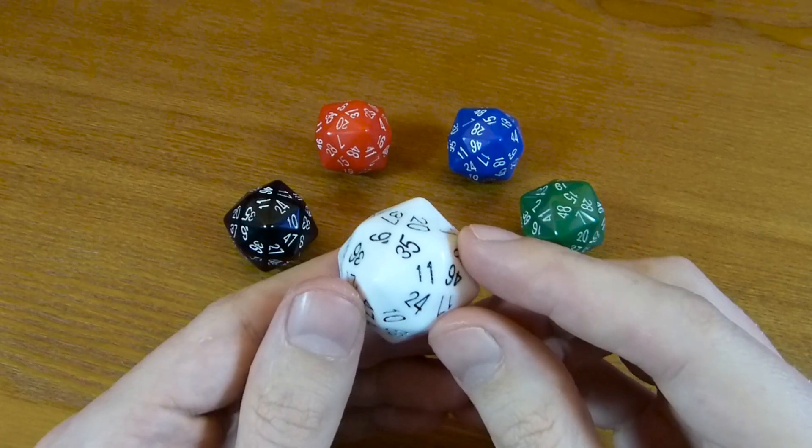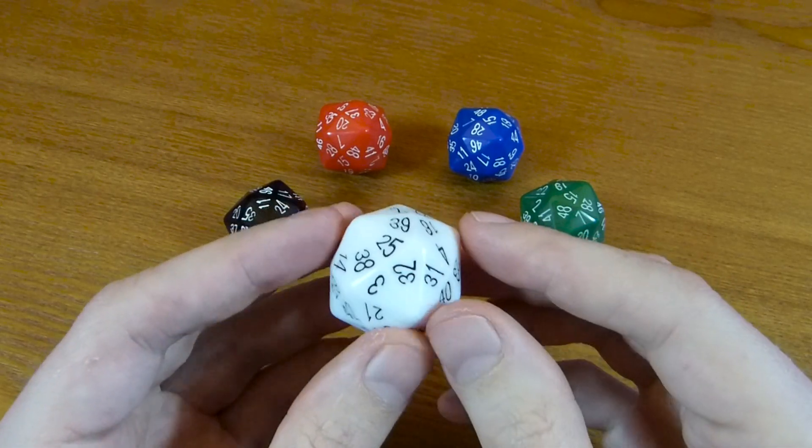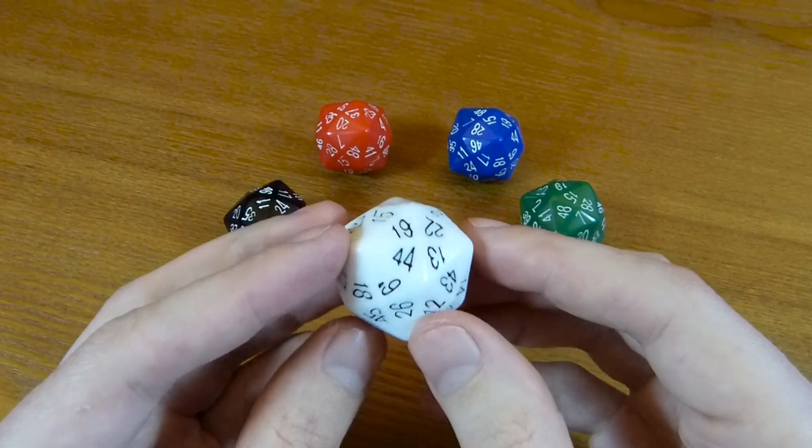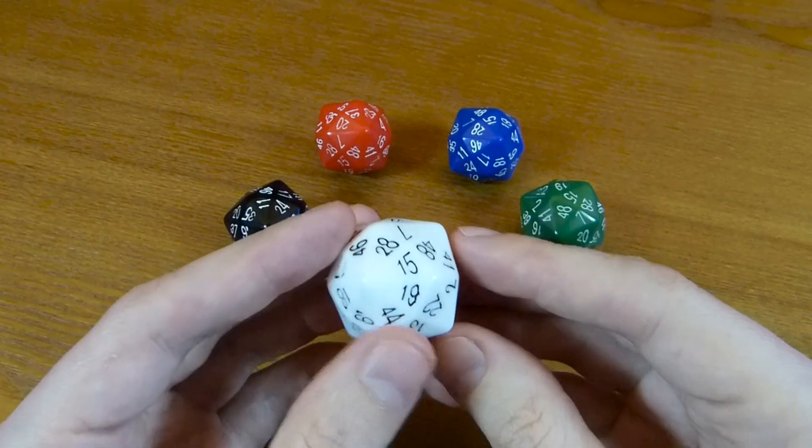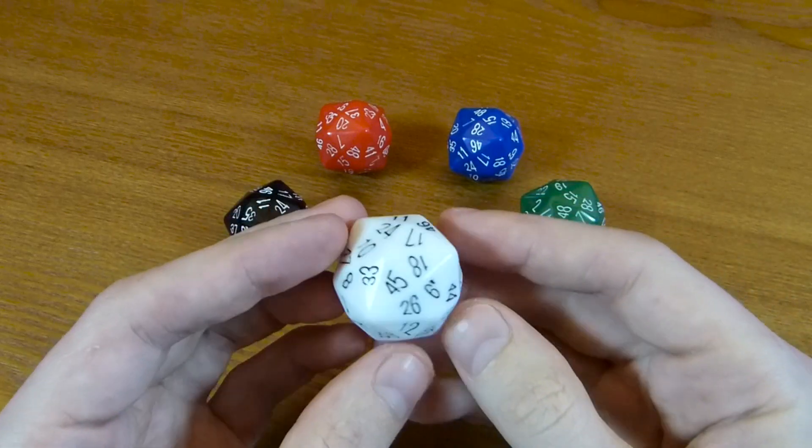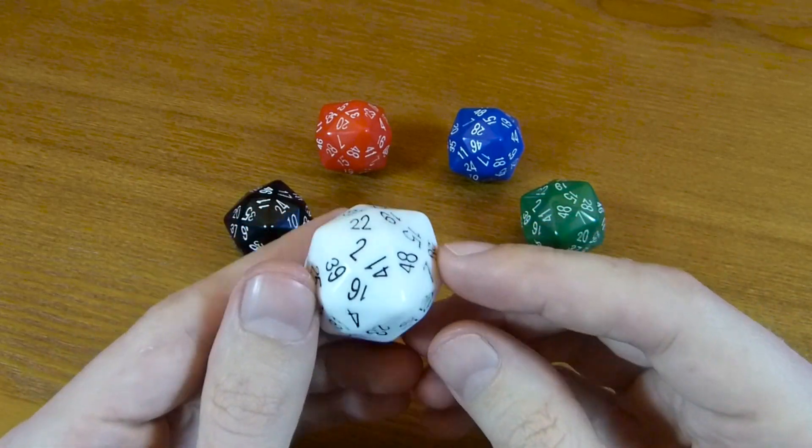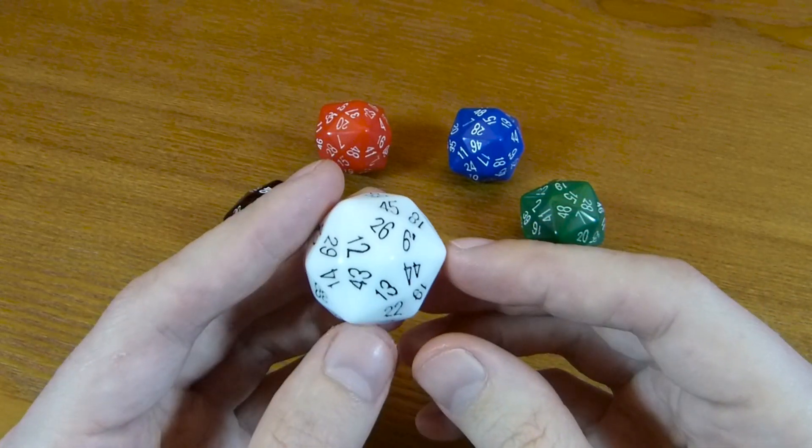So this fills in the last gap in terms of which numbers you can make a fair die out of. If you don't count things like double pyramids and prisms, there's a limited list of numbers of sides that a fair die can have.